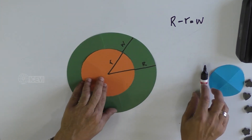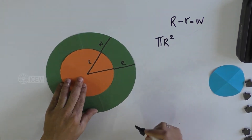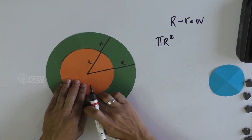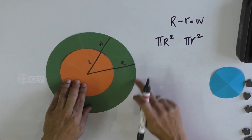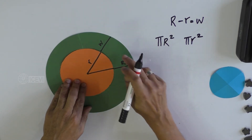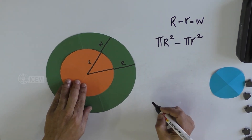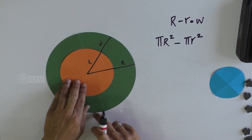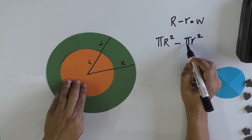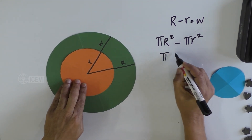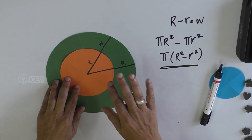Now let us find out the area of the circular ring. The area of the full circle is πR². The area of the small circle with radius r is πr². The circular ring is the difference between the area of the larger circle and the smaller circle: πR² minus πr², which equals π(R² − r²).